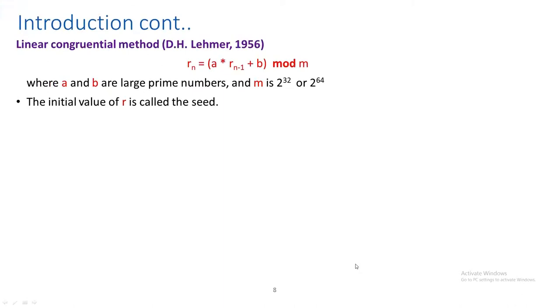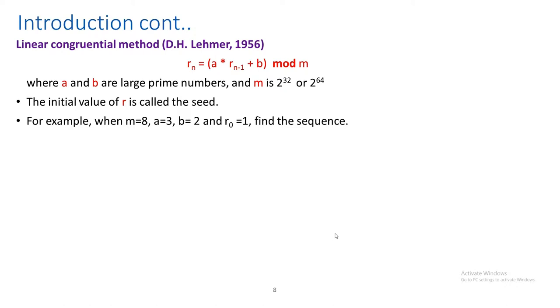One well-known algorithm for generating pseudo-random numbers is the linear congruential generator. The formula is: r_n = (a · r_{n-1} + b) mod m. Using a given example, you can observe the sequence being generated — for instance, a sequence of 5, 1, 5, 1 repeating.